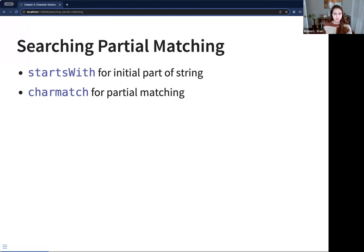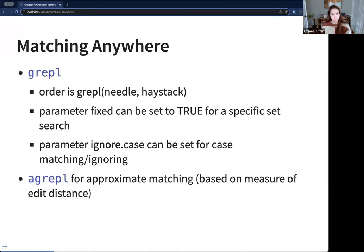For partial matching, you can search starts with for the initial part of the string or character match for partial matching throughout a string. For matching anywhere, you can use grepl. I'm never sure how to pronounce some of these functions, but grepl works for me. The order for grepl is the thing you're searching for and then what you're searching in, or how you phrased it, was needle in haystack.